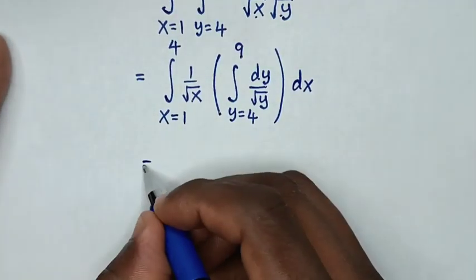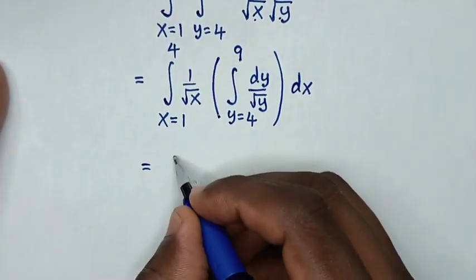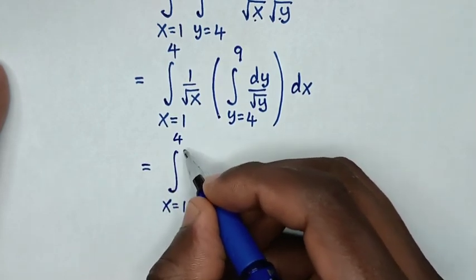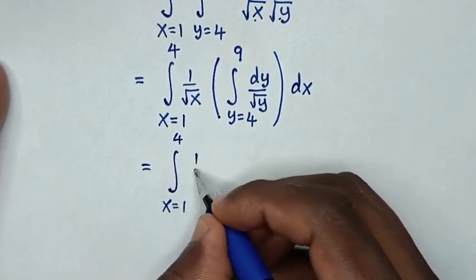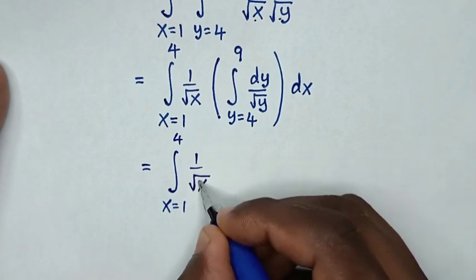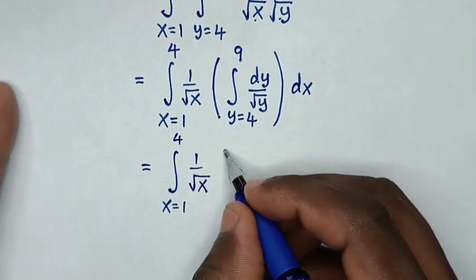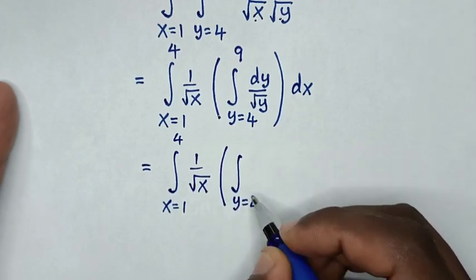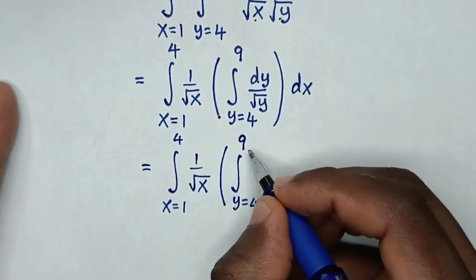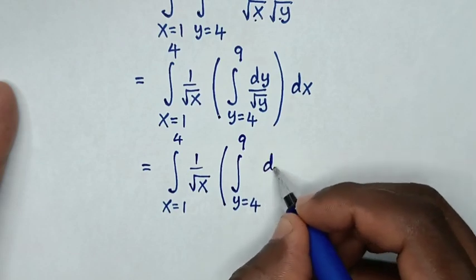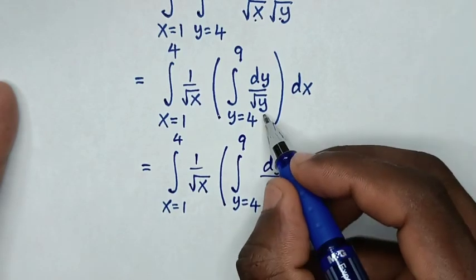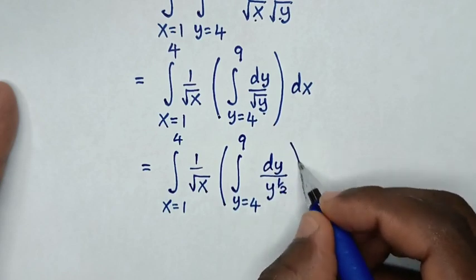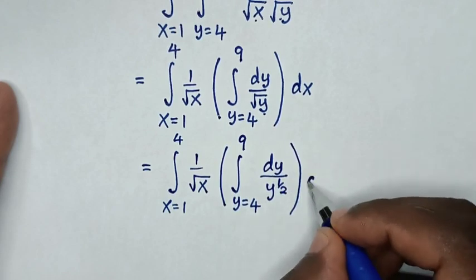Then it will be equal to the integral from x equals 1 up to 4, 1 over square root of x, then bracket integral from y equals 4 up to 9, dy over square root of y, which is the same as y to the power of a half, then bracket dx.